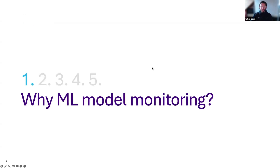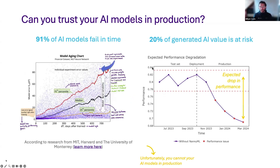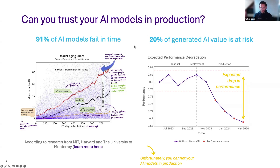To start from the beginning — why do we need ML model monitoring? The first question we need to ask ourselves is: can we actually trust our machine learning models in production? There has been research published from MIT and Harvard where they analyzed a bunch of datasets and observed how models behaved over time — something they called AI aging. Apparently 91% of those models deteriorated over time. Anecdotally, we also know that when we deploy a machine learning model, in the first six months around 20% of the generated value may be at risk due to covariate shift, concept shift, new patterns emerging, and old patterns becoming obsolete. Unfortunately, we cannot trust our machine learning models blindly in production.